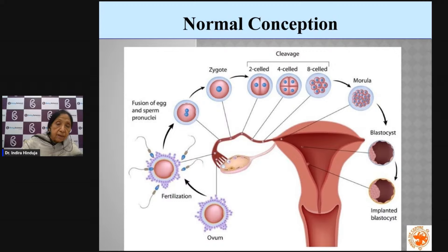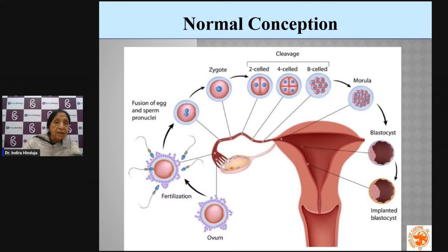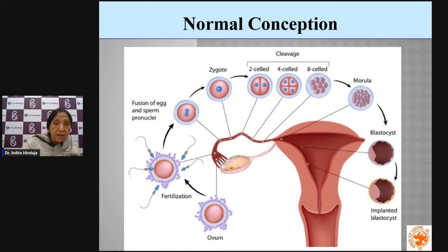The egg is released from the ovary, and the finger-like processes of the fallopian tube grab that egg as it enters the tube. At the same time, in the vagina, sperm is deposited either by IUI or natural intercourse. The sperm migrates from the lower passage through the tube to meet the egg in the fallopian tube.